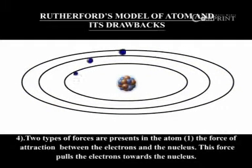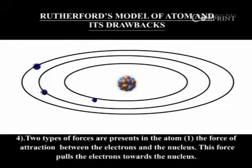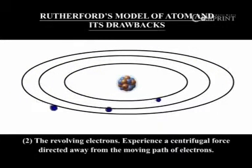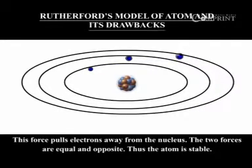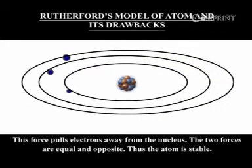Two types of forces are present in the atom. The force of attraction between the electrons and the nucleus pulls the electrons towards the nucleus. The revolving electrons experience a centrifugal force directed away from the nucleus. The two forces are equal and opposite, thus the atom is stable.